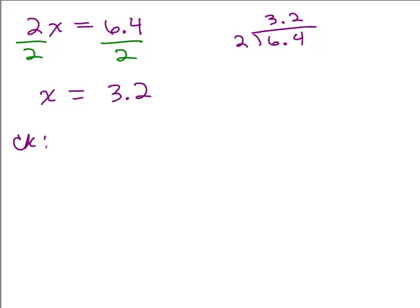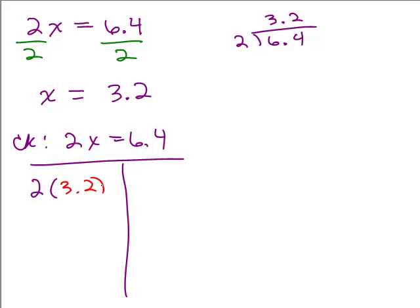So let's check. Here's our original equation. We're going to plug in 3.2 for x and simplify. So how do you multiply numbers with decimals? Don't worry about the decimals. Think of it as 2 times 32, which is 64, and then move your decimal in one place. So the left-hand side is 6.4. Now we look at the right-hand side. It happens to also already be 6.4, so it checks.